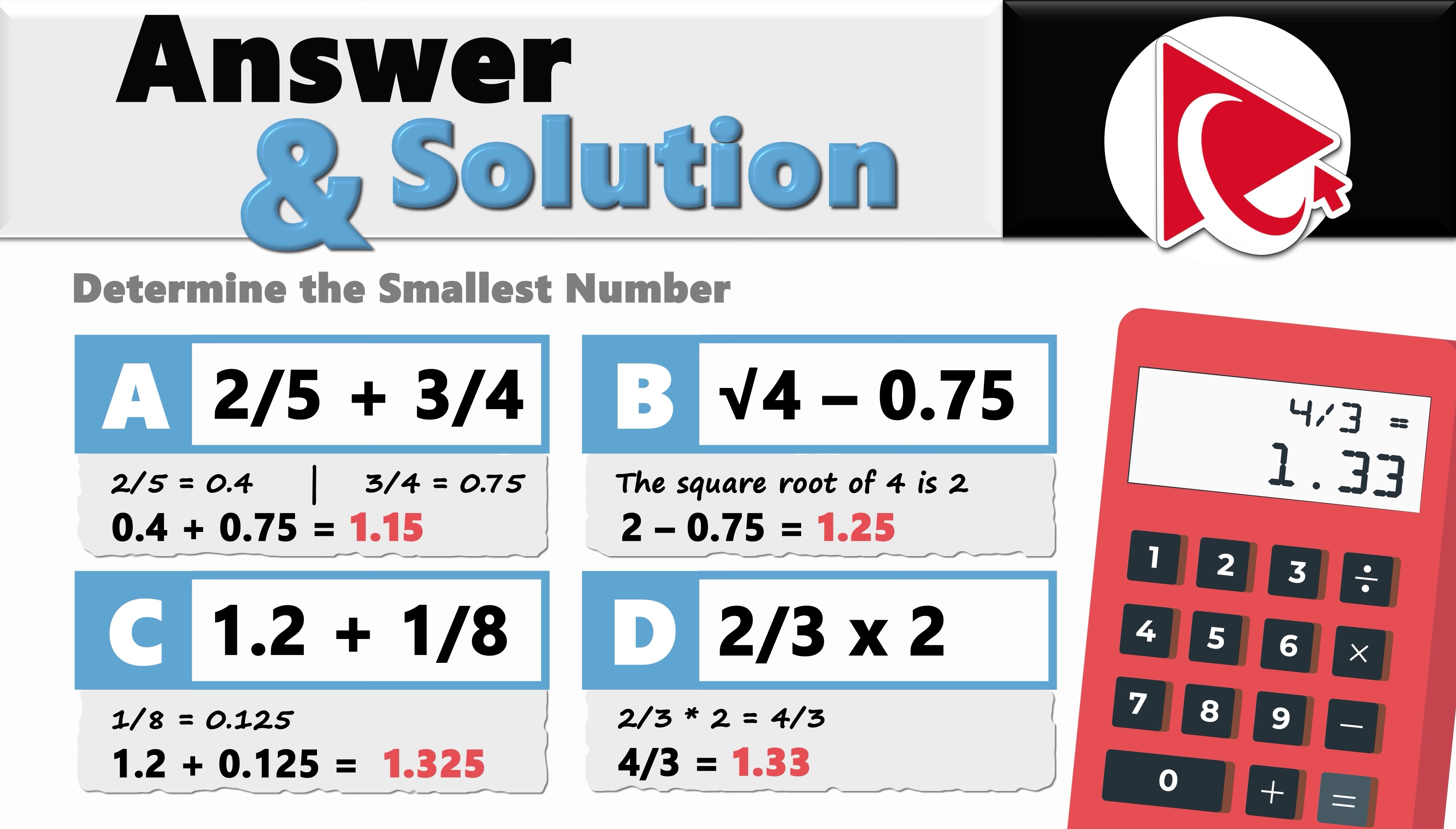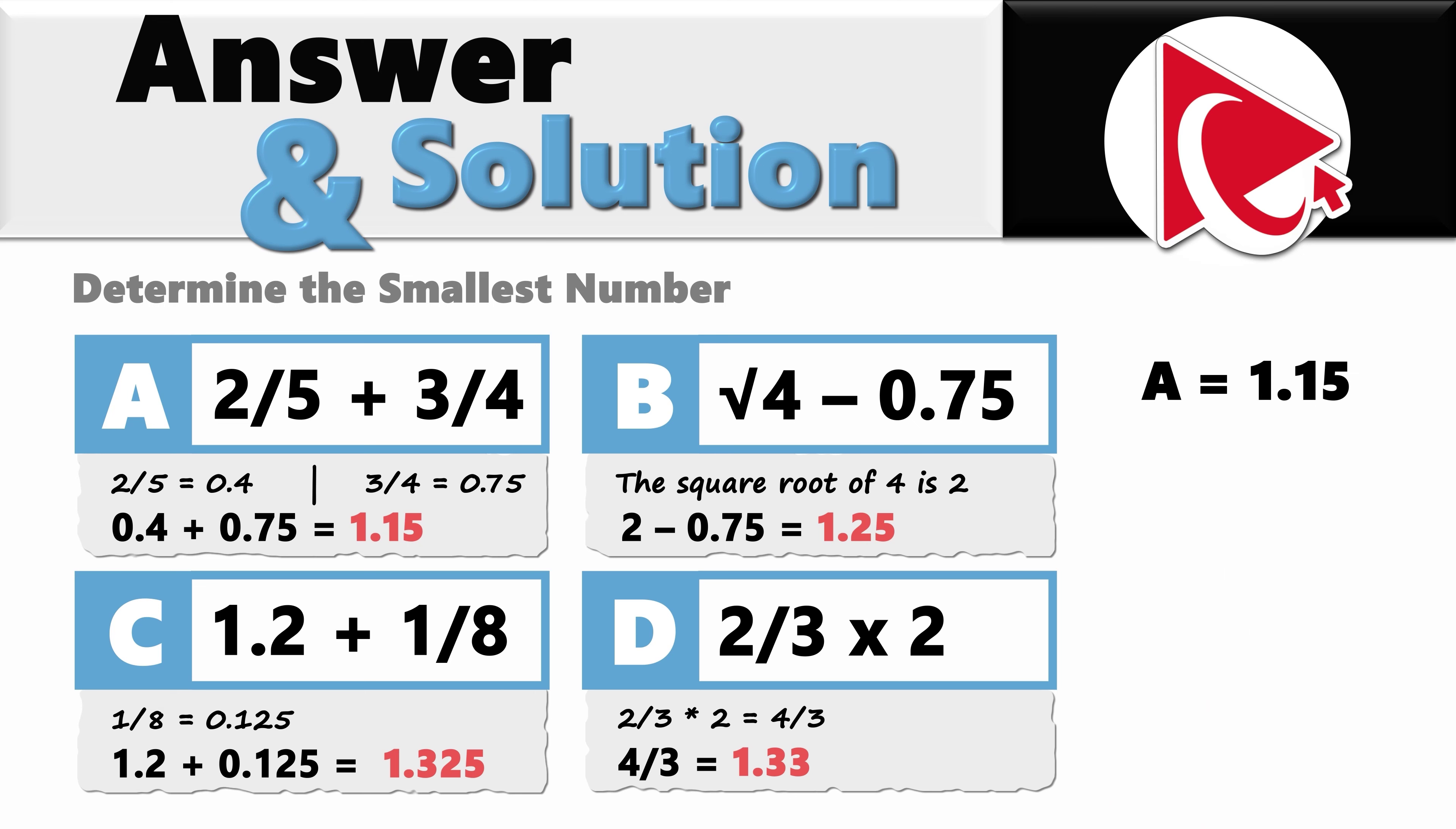So let's summarize what we've got. For choice A, we got 1.15. For choice B, the result is 1.25. For choice C, 1.325. And last but not least, choice D is 1.33. So the smallest result is 1.15, and the correct answer is choice A: 2/5 plus 3/4.